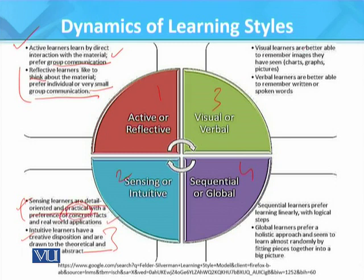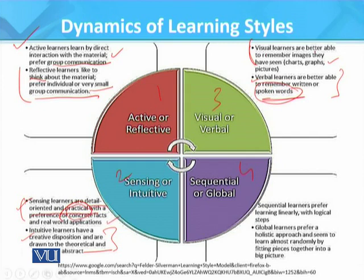The third dimension is visual versus verbal learners. Visual learners are better able to remember images — for example, charts, graphs, and pictures — so they prefer visual representations. Verbal learners are better able to remember written or spoken words, with particular emphasis on spoken words. Visual learners prefer images and charts and graphs, while verbal learners prefer written and spoken communication.